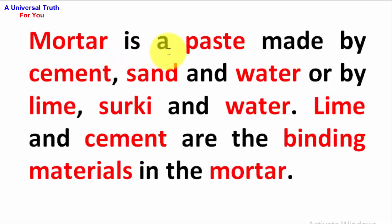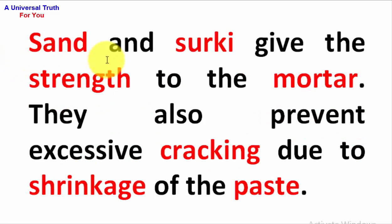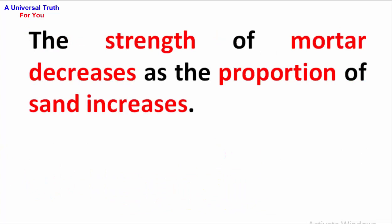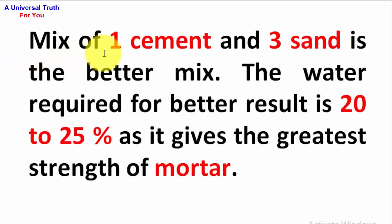Mortar is a paste made by cement, sand and water, or by lime, surki and water. Lime and cement are the binding materials in Mortar. Sand and surki give strength to the Mortar and also prevent excessive cracking due to shrinkage of the paste. The strength of Mortar decreases as the proportion of sand increases. A mix of one cement and three sand is the better mix. The water required for better results is 20–25%, as it gives the greatest strength of Mortar.